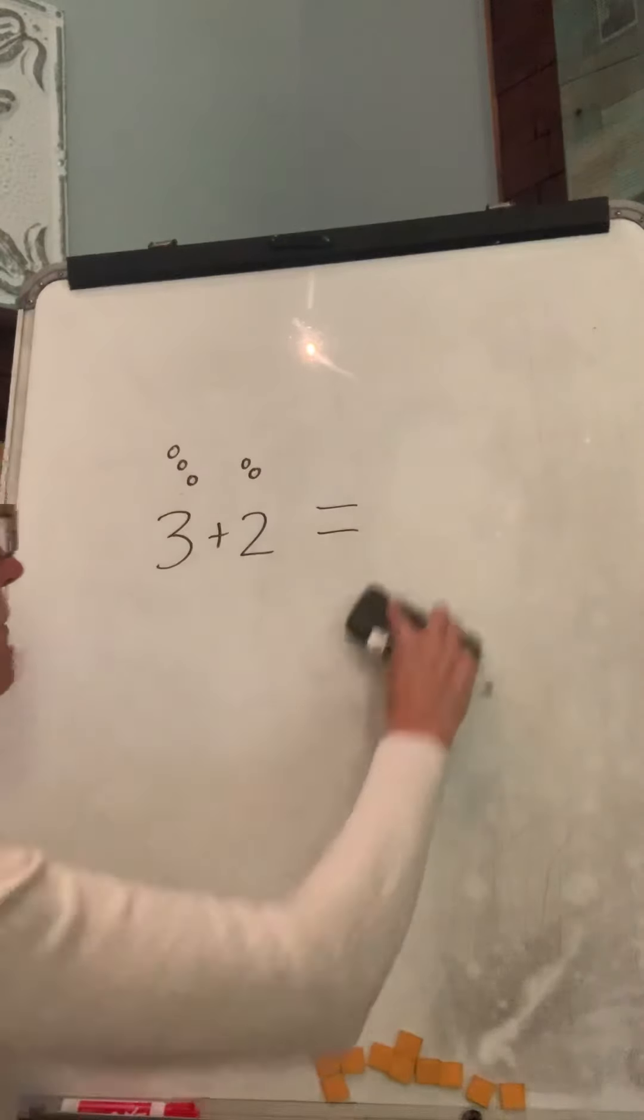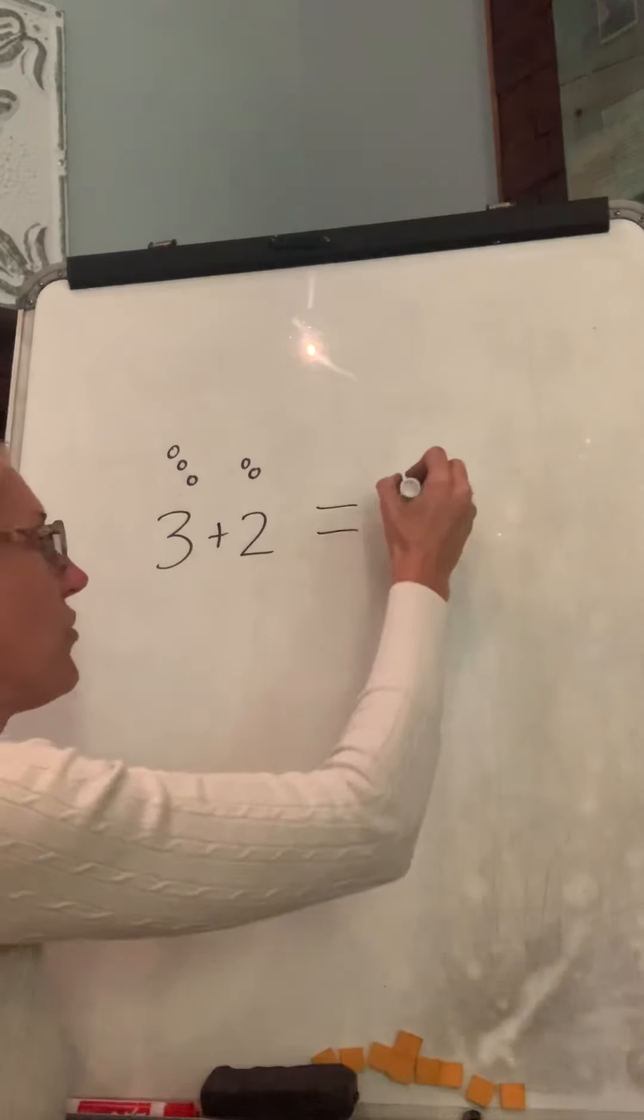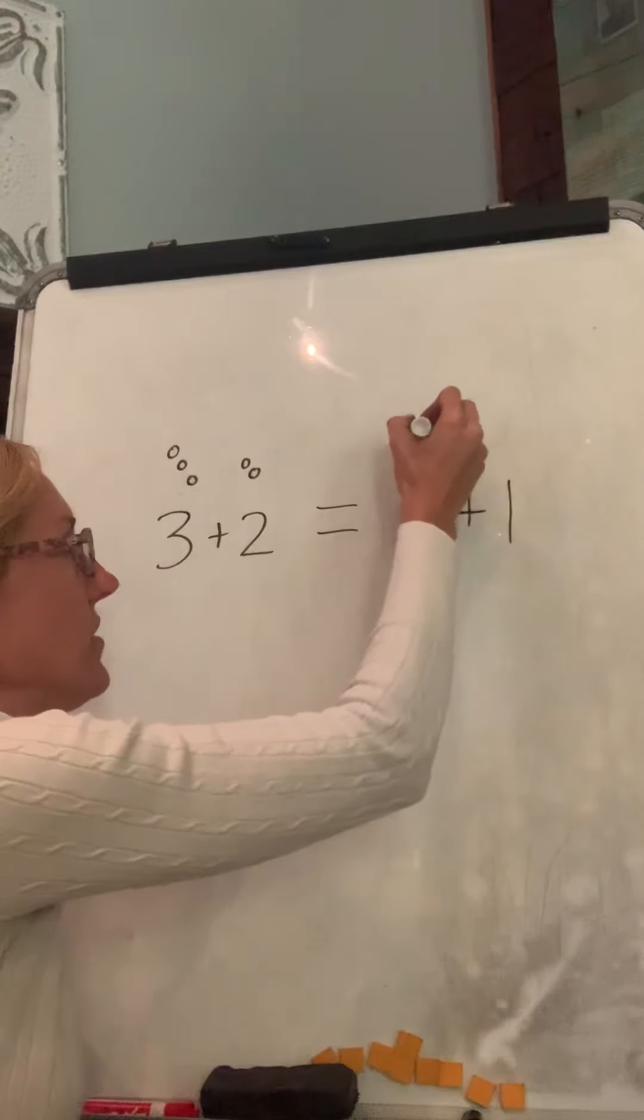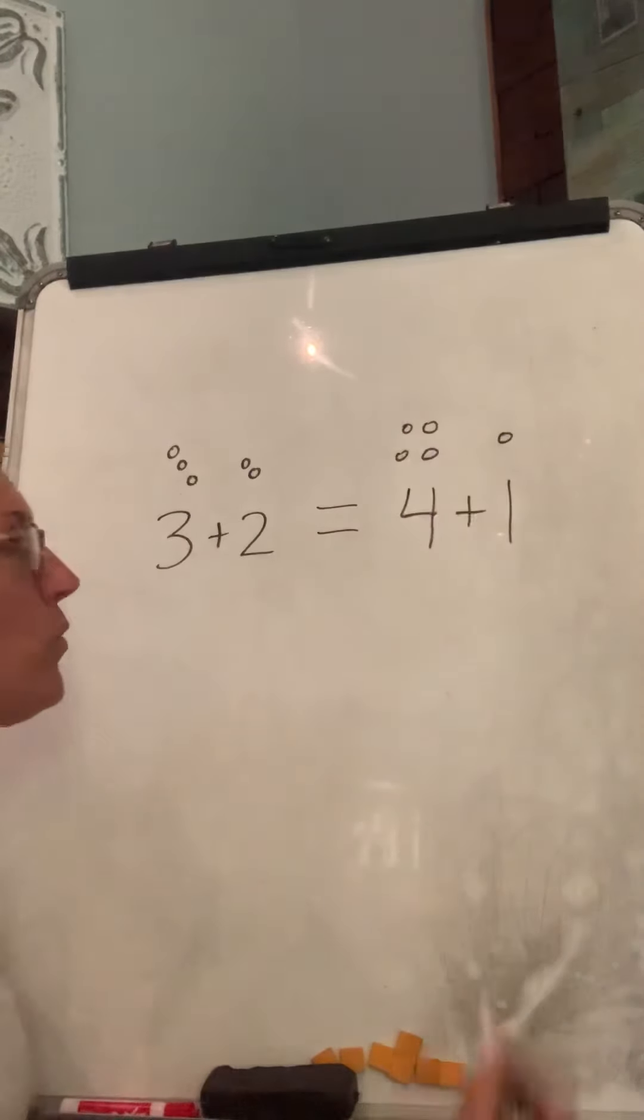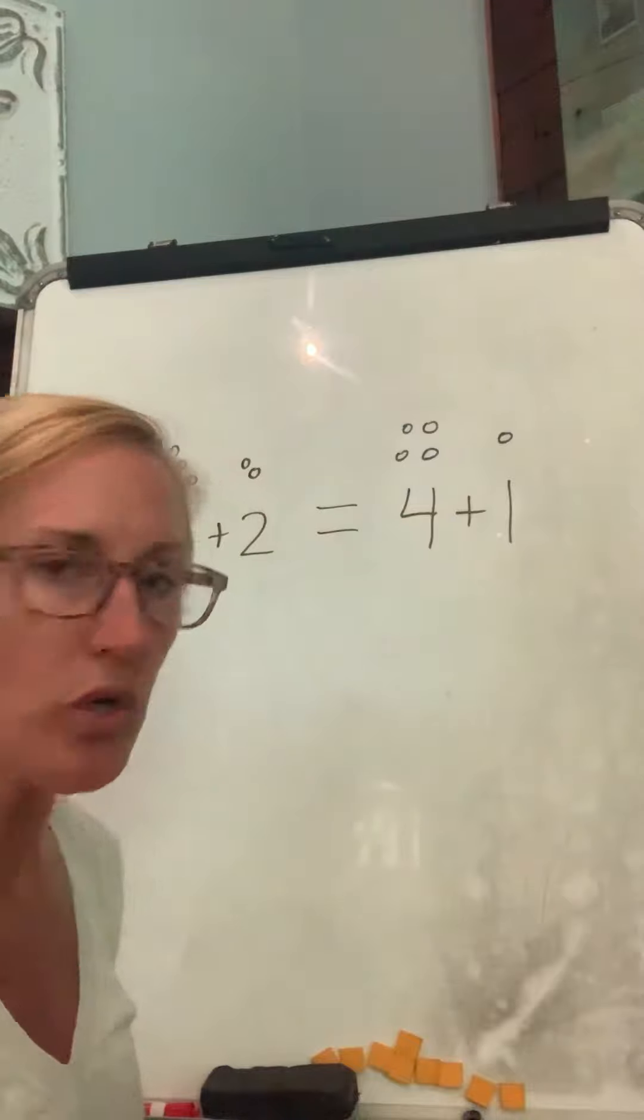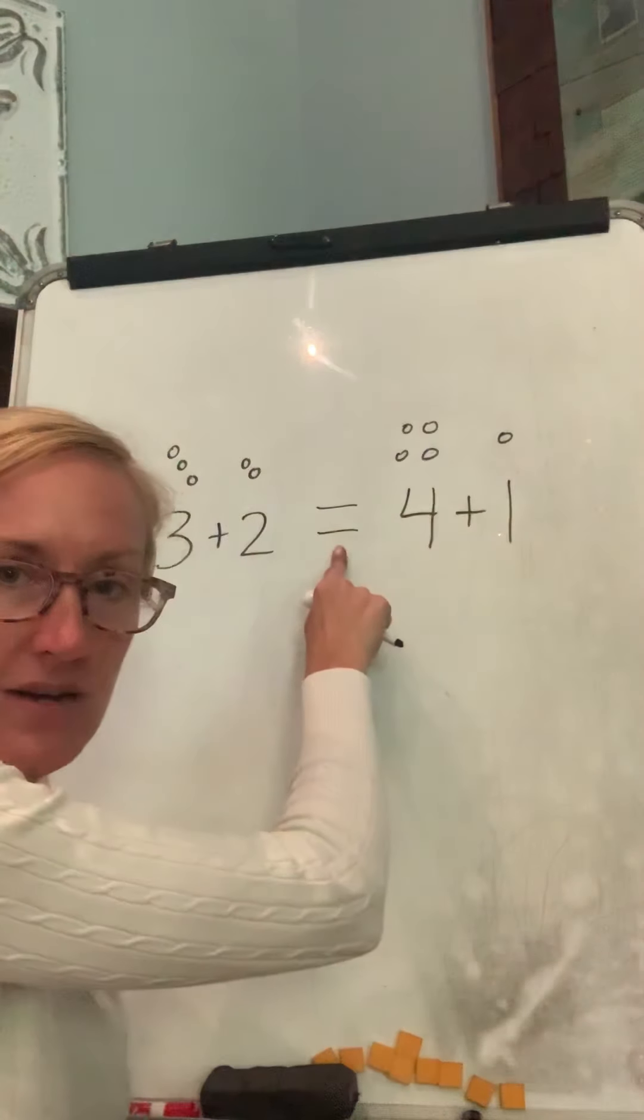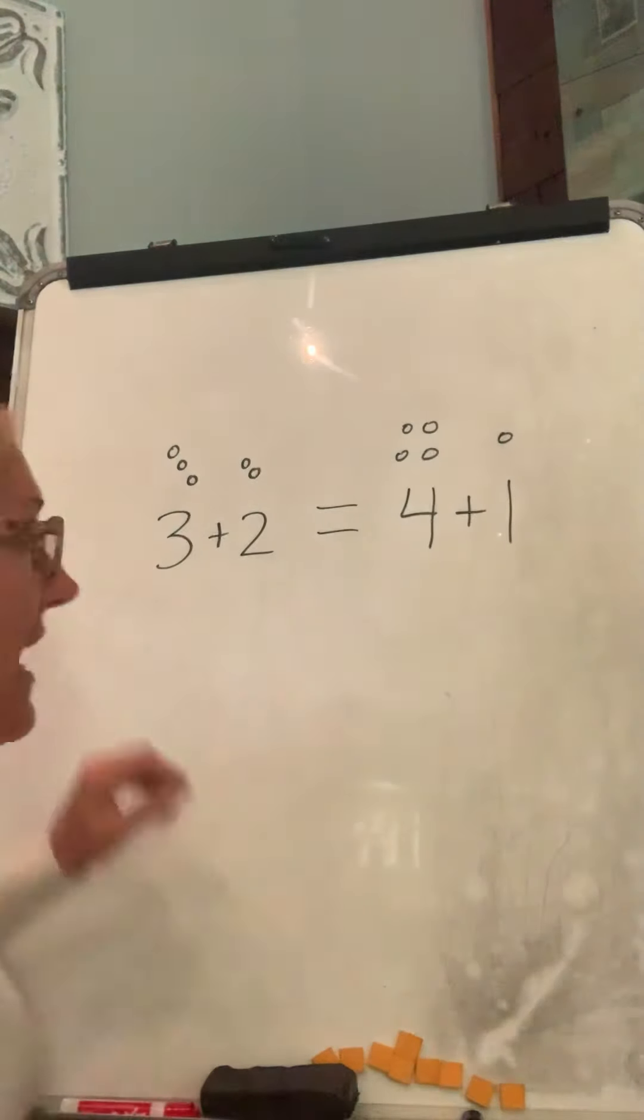Well, what if I wrote three plus two equals four plus one? One, two, three, four, and one. Are those equal? Can I keep my equal sign here? Okay, let's see. Do they have the same number of dots on each side?